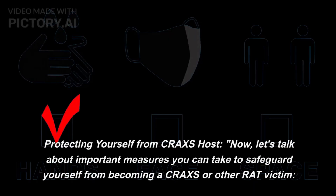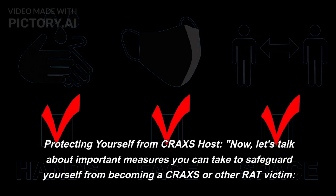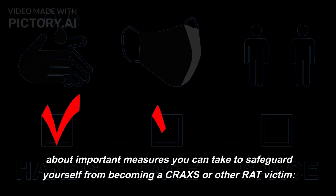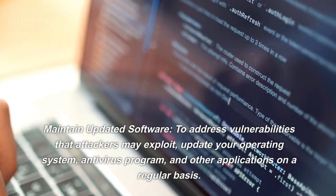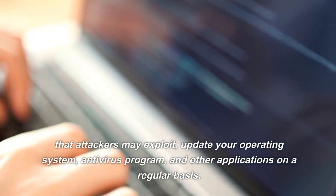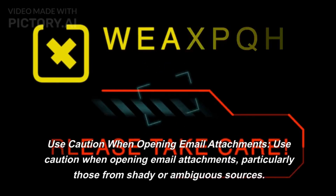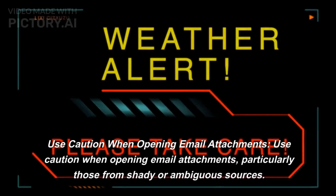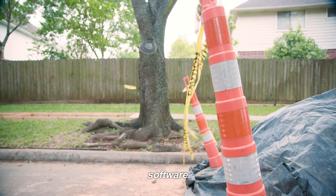Protecting yourself from CRAXS. Now, let's talk about important measures you can take to safeguard yourself from becoming a CRAXS or other RAT victim. Maintain updated software to address vulnerabilities that attackers may exploit — update your operating system, antivirus program, and other applications on a regular basis. Use caution when opening email attachments, particularly those from shady or ambiguous sources. Before opening attachments, scan them with antivirus software.